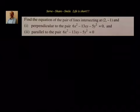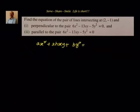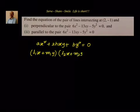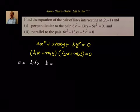Let us first write down. We know that ax² + 2hxy + by² = 0 represents a pair of straight lines. We can write it as (l1x + m1y)(l2x + m2y) = 0, where a = l1·l2, b = m1·m2, and 2h = l1·m2 + l2·m1.